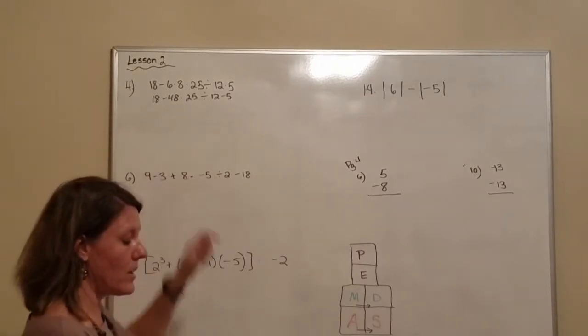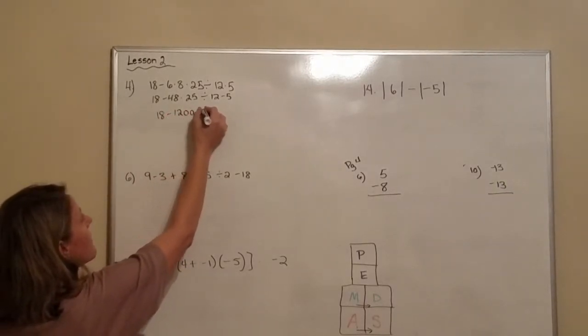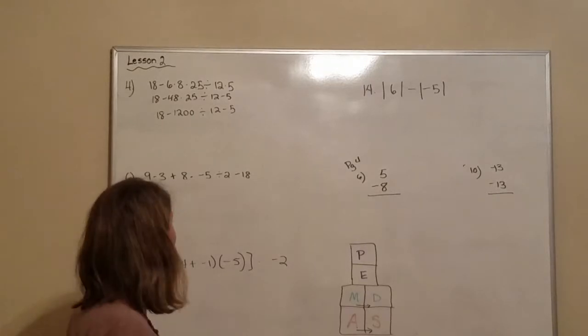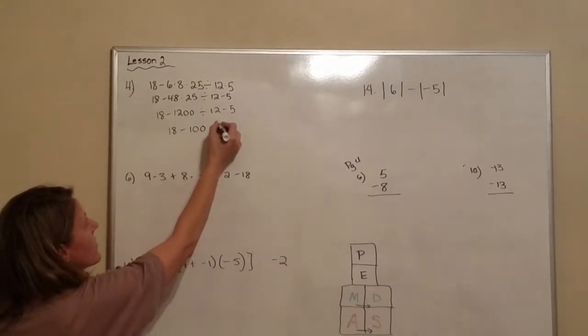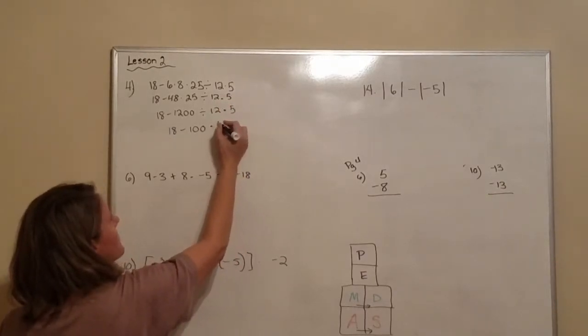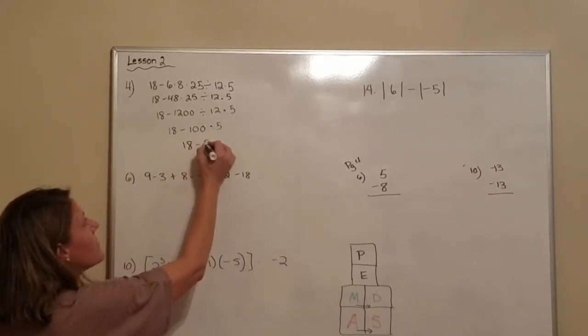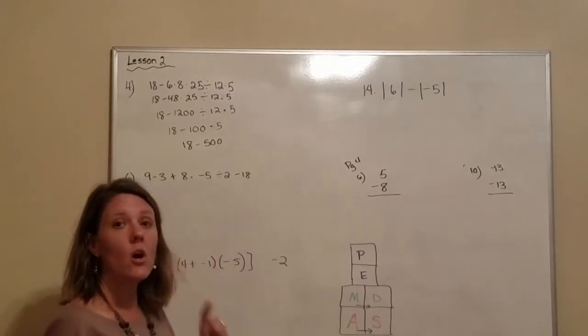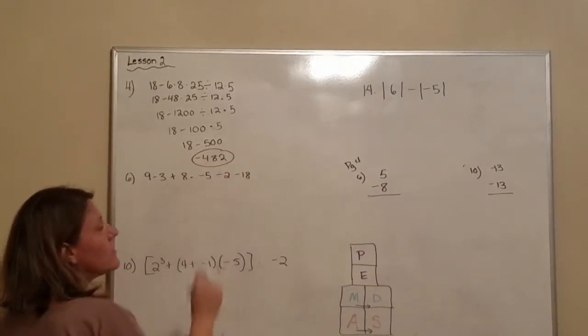I just went ahead and wrote the rest down and now I need to do the next multiplication. Well when I multiply that, I know it is 1200. So 18 minus 1200 divided by 12 minus 5. Division again comes before subtraction, so we'll do that next. So when I divide, that's 18 minus 100, oh, this is a times, sorry. Copied it wrong. Times 5. So 100 times 5 is 500. So 18 minus 500. We subtract it and take the sign of the larger. Since 500 is larger, our answer is going to be a negative number and it's going to be negative 482.